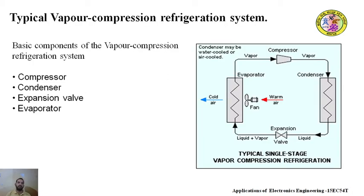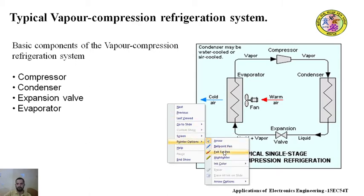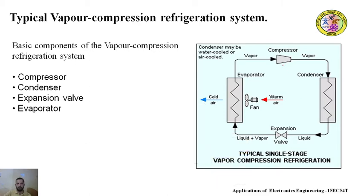Now we will see one of the typical vapour compression refrigeration systems which is used in air conditioners or refrigerators. The basic components involved in the vapour compression system are: compressor, condenser, expansion valve, and evaporator. Now we will see the working of the refrigeration system.